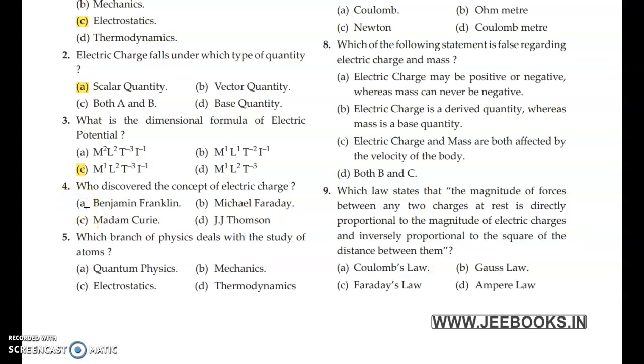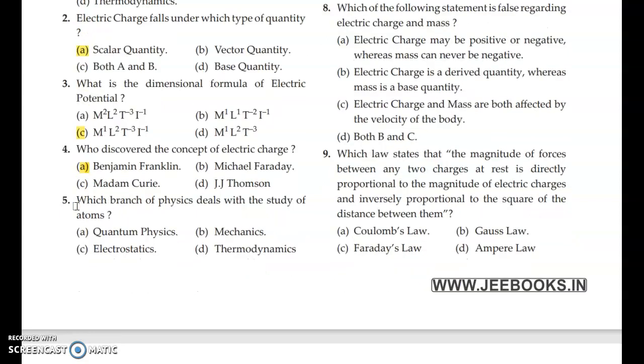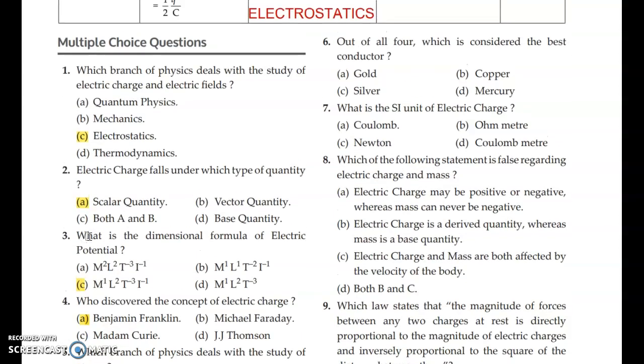These are basic questions from class 9th and 10th. Which branch of physics deals with the study of atoms? Answer is option A. Which is considered the best conductor? Answer is option C. Silver is the best conductor as it has a large number of free electrons to transfer heat and electricity. What is the SI unit of electric charge? Answer is A, Coulomb.